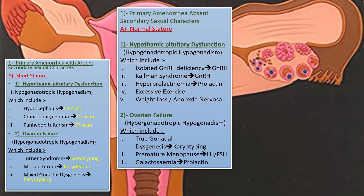For primary amenorrhea with absent secondary sexual characteristics and normal stature: hypothalamic-pituitary dysfunction such as hypogonadotrophic hypogonadism — isolated GnRH deficiency is evaluated by GnRH level. Kallmann syndrome is diagnosed by GnRH and LH-FSH levels. Hyperprolactinemia by serum prolactin. Excessive exercise, weight loss, and anorexia nervosa affect LH-FSH levels. For ovarian failure, LH-FSH and karyotyping diagnose gonadal dysgenesis. Premature menopause is assessed by LH-FSH level, and galactosemia by prolactin level.